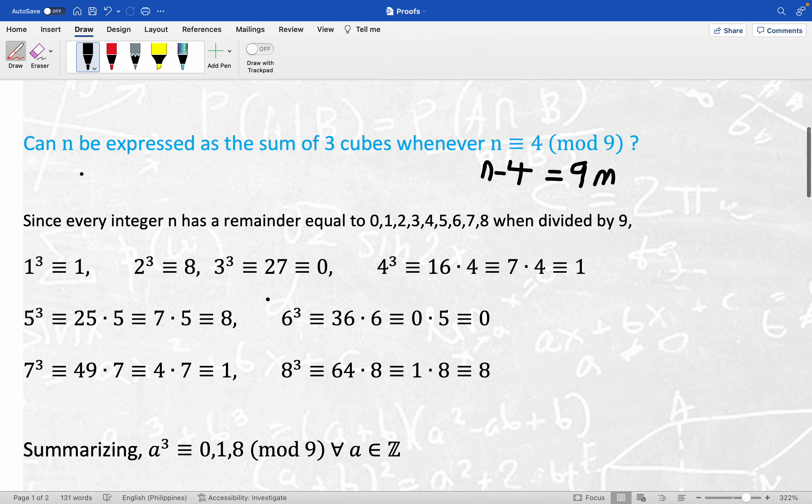Now, the way to get a handle on this is just to note that every integer has a remainder equal to zero, one, two, three, four, five, six, seven, or eight upon division by nine. And so that leads to this computational step right here where we cube all of these remainders one through eight and see what they're congruent to mod nine. It's understood we're doing mod nine down here. I don't repeat that, but it is mod nine.